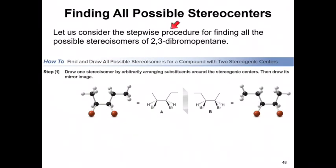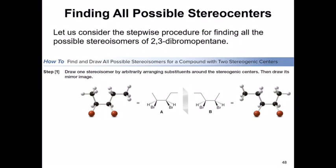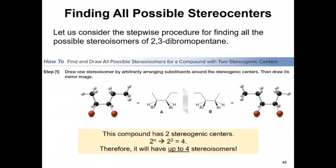Here's an example: we have 2,3-dibromopentane. How do we identify all the stereoisomers for this compound? The very first step is to draw the structure and then find the stereogenic centers or the chiral centers. You can see that 2,3-dibromopentane contains two stereogenic centers — each carbon contains a total of four different groups. So that means it can have up to four stereoisomers. The first step is to identify the stereogenic centers and then calculate how many possible stereoisomers the molecule can have.